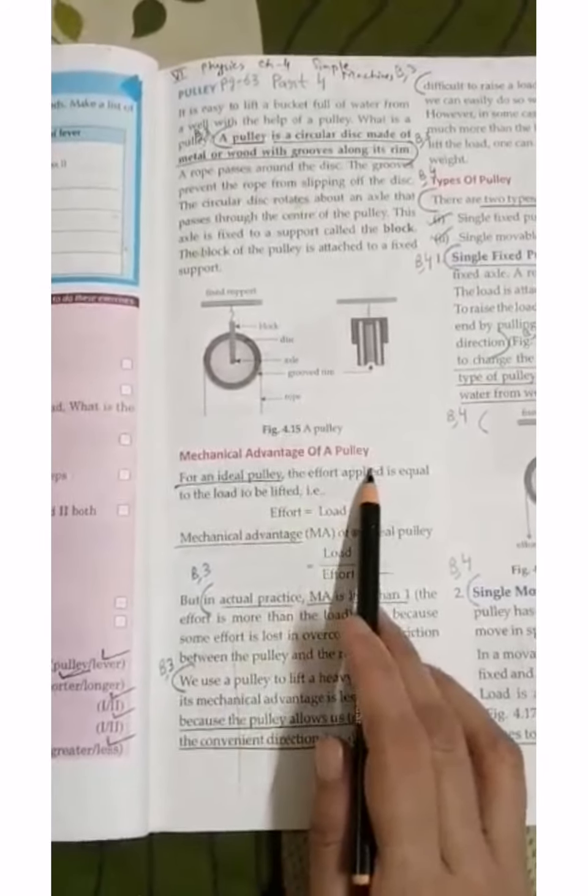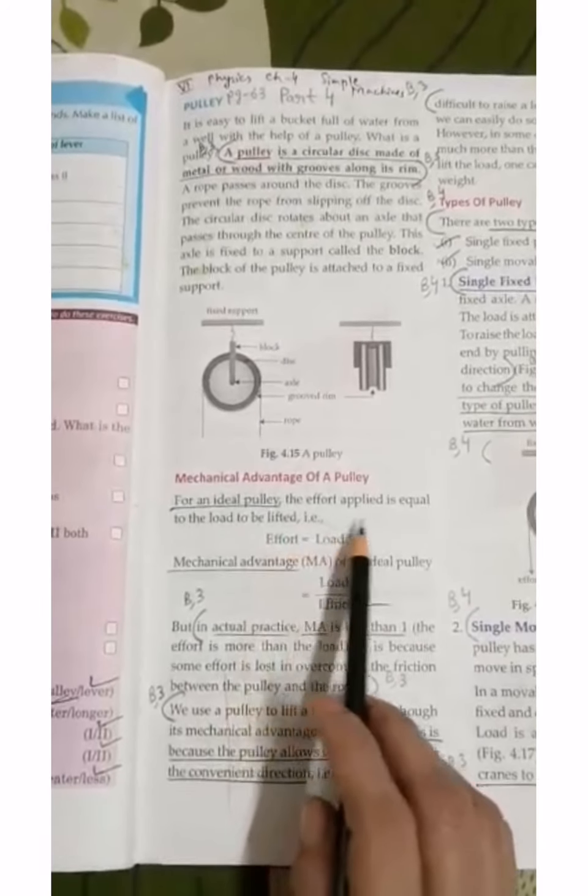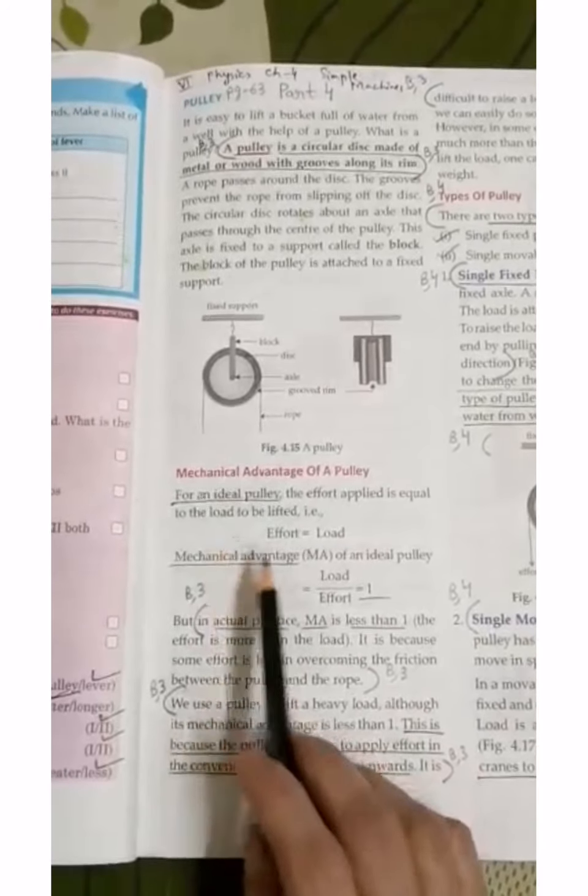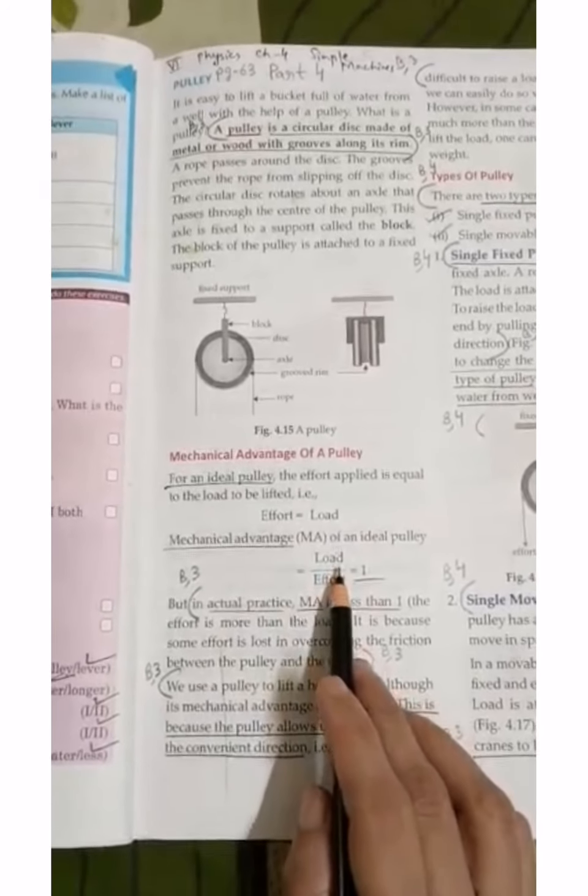What is mechanical advantage? For an ideal pulley, the effort applied should be equal to the load. That means effort equals load. Mechanical advantage is load by effort, which is 1.